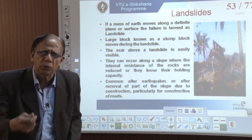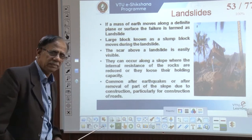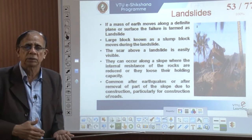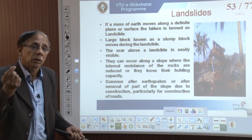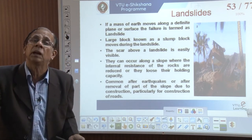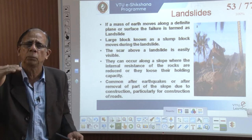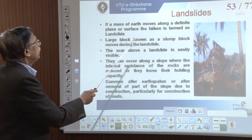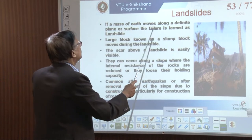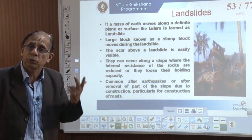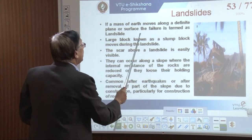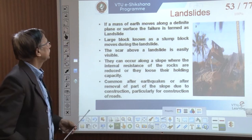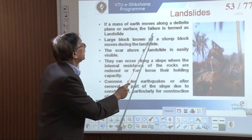Another aspect of earthquake effects is the landslide. What is a landslide? How does it occur? Landslide is nothing but a mass of earth material — maybe rocks, maybe soil — that moves along a definite plane or surface. This failure is termed a landslide.